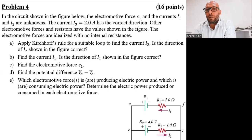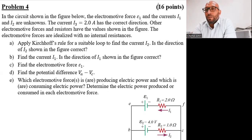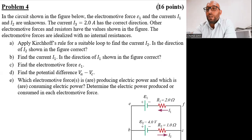This is the final exam of GP2 for Fall 2023. The question states: in the circuit shown below, the electromotive force epsilon 1, current I1, and current I2 are unknown. The current I3 equals 2A and has the correct direction. Other EMFs and resistors have values shown in the figure, and the EMFs are idealized with no internal resistances. Question 1: Apply Kirchhoff's rule for a suitable loop to find current I2. Is the direction of I2 shown in the figure correct?